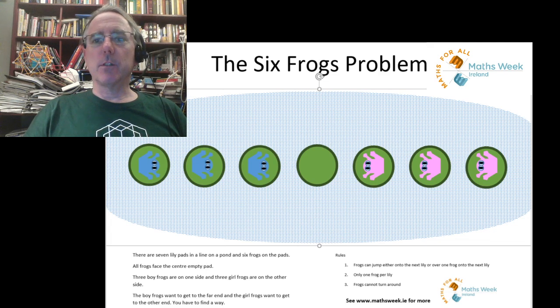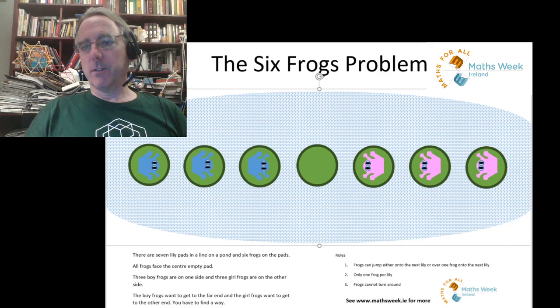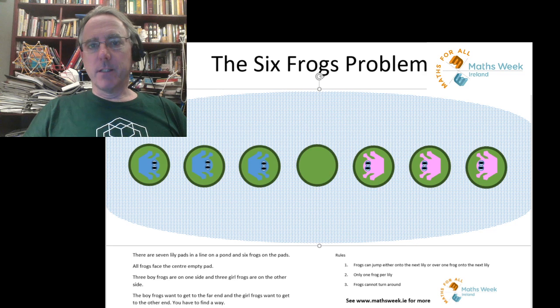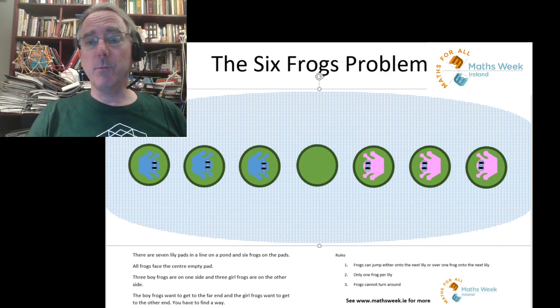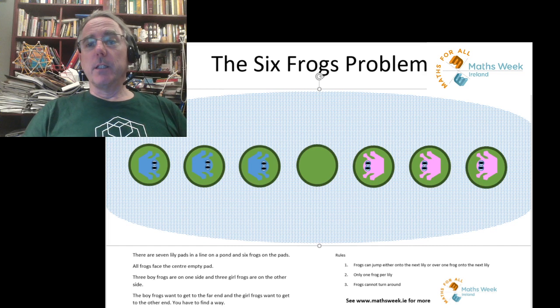Now the three frogs on one side want to move to where the other frogs are and vice versa. The way I've heard this told is that there's three boy frogs and three girl frogs, and we've used a bit of gender stereotype there with the colors pink and blue.